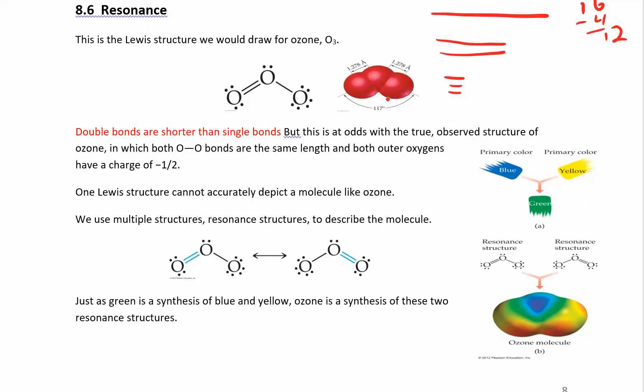When you look at the real molecule of ozone, you don't really have sometimes you have a single bond and sometimes you have a double bond. You actually have two bonds that are exactly the same and they're somewhere between a single and a double. So you can't really express that with just one resonance structure. The real structure looks like a hybrid of both of these.